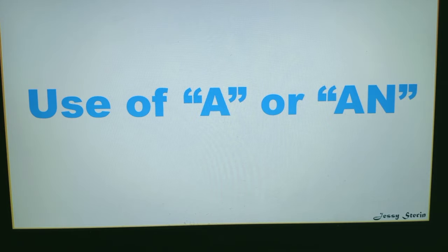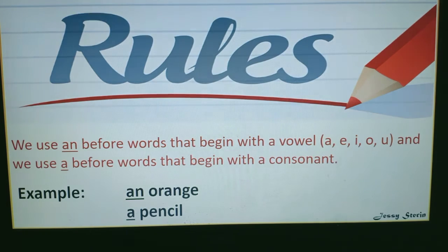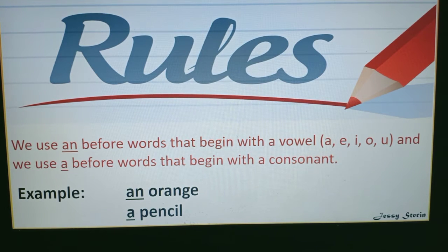Hello children, today I'll tell you where to use 'a' and where to use 'an' in a sentence. Let us understand this by reading the rule first. The rule says we use 'an' before words that begin with a vowel (a, e, i, o, u) and we use 'a' before words that begin with a consonant.